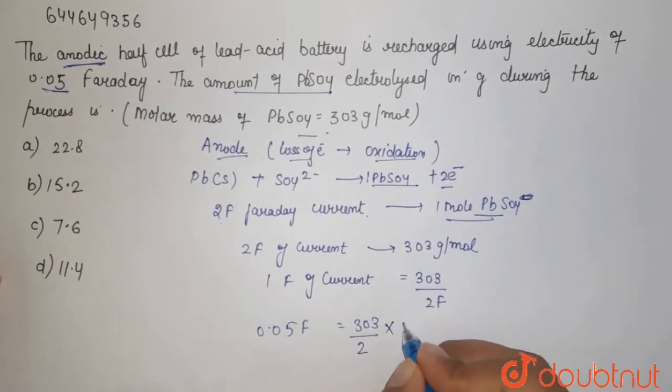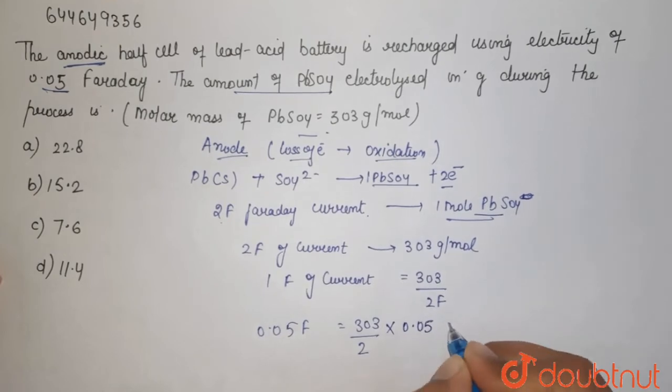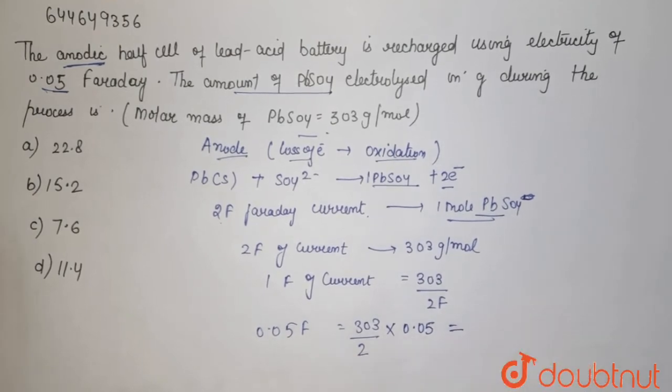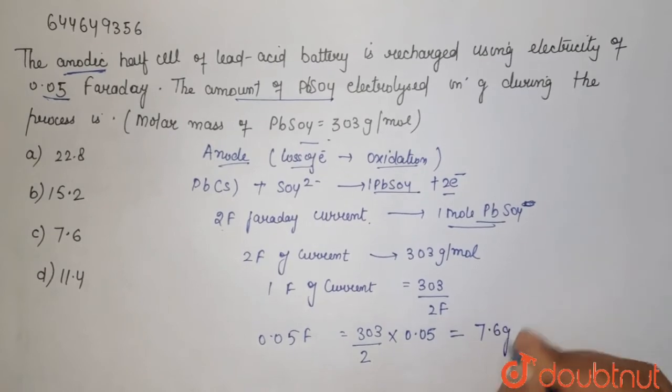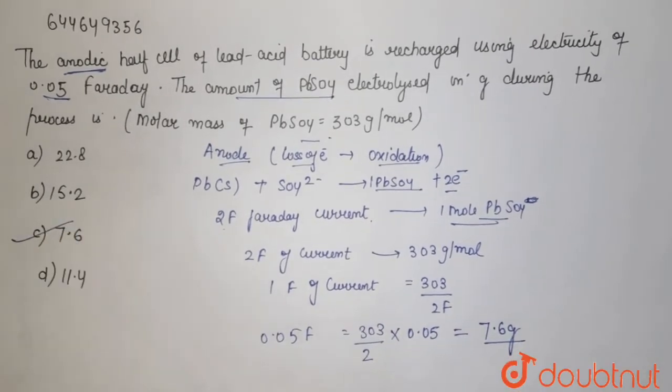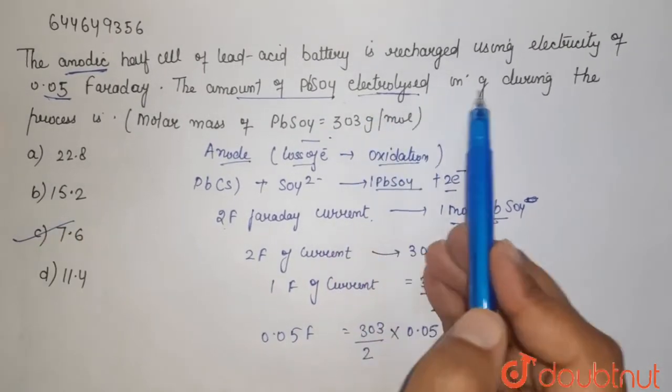So if you solve this, which is equal to 7.6 grams. So option C will be right. The amount of PbSO4 electrolyzed in grams during the process is 7.6 grams when you are having 0.05 Faraday of electricity.